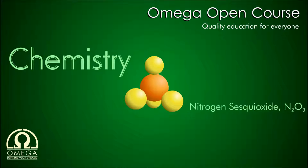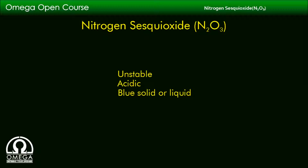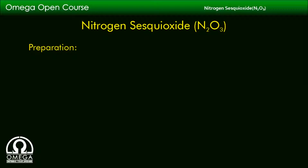Welcome to Omega Open Course. In this video, we are going to learn about N2O3, which is also called Nitrogen Sesquioxide. It is an unstable compound. It is acidic and blue-colored solid or liquid.